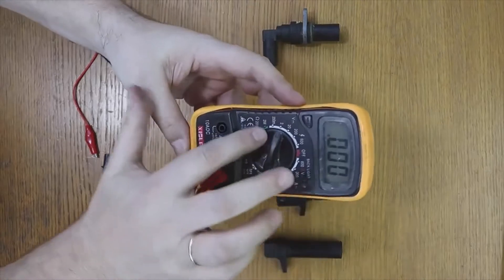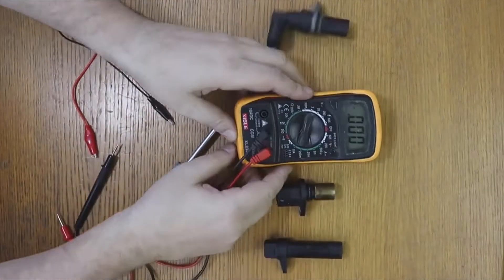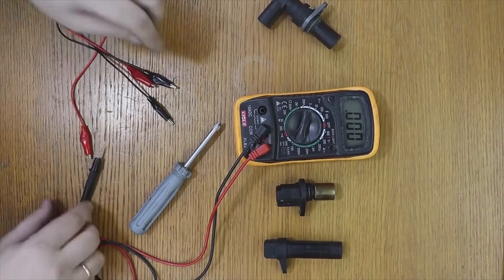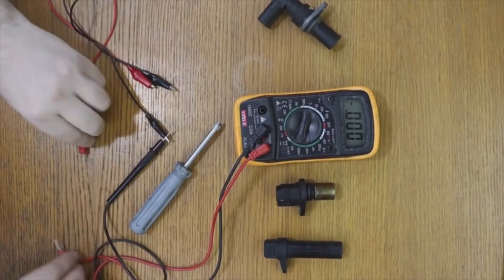We will put it in direct current, in 2 volts, and now we will connect the cables. First I connect them to the multimeter and then to the crankshaft position sensor, which has two pins.